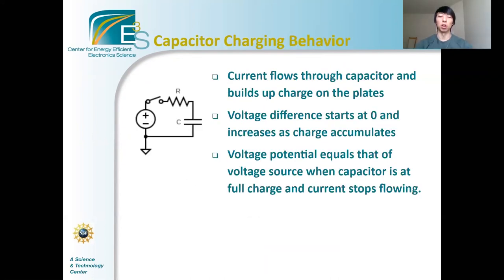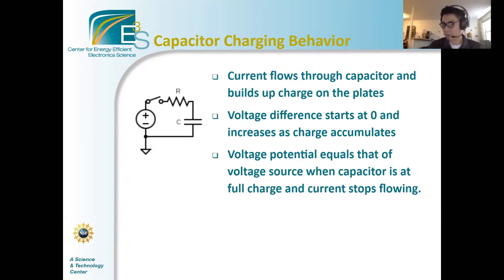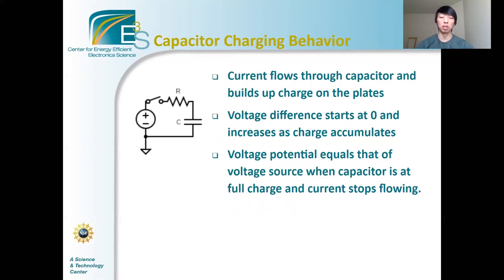Next, we're going to cover how capacitors charge and discharge. In this simple scenario, when the switch is flipped on, current flows through the resistor and through the capacitor from the voltage source. Initially there is no potential difference between the two plates since there is no charge on either plate. As current flows through the capacitor, opposing charges build up on the two plates, which restricts current flow and creates a potential difference. Eventually the charges accumulate to maximum capacity and no more current flows. At this stage the capacitor will have the same voltage potential as the voltage source.